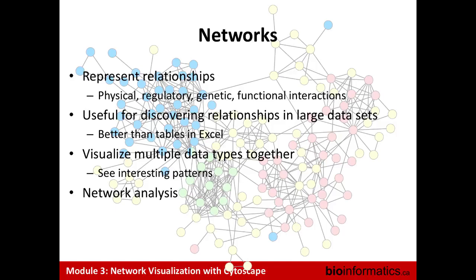Networks represent relationships. It's a general type of data structure — you can imagine relationships in lots of different fields. People study these a lot in social networks, for instance, how people are connected. In biology, we tend to use networks for molecular interaction networks or genetic interaction networks related to the cell. But you could imagine cell-cell interaction networks related to tissues, or food webs in ecology. So they have multiple applications, even in biology.